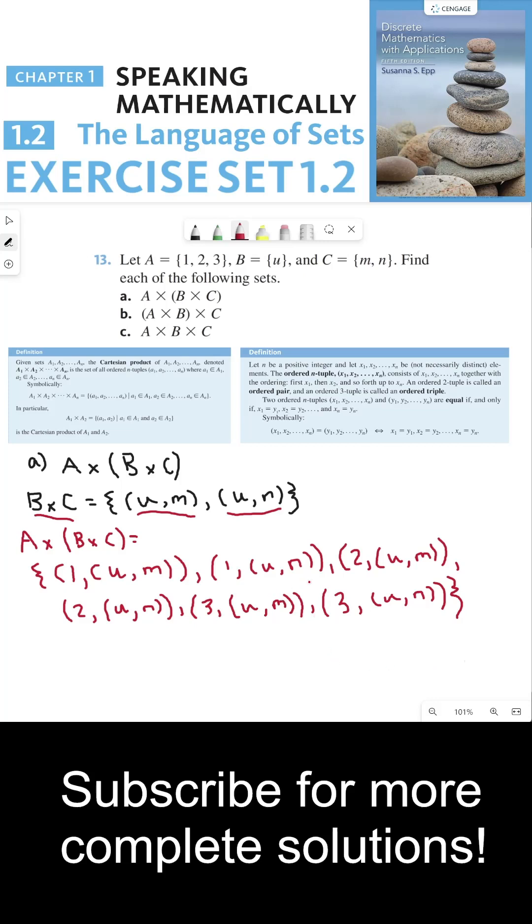So this cross product has six elements. All six are ordered pairs where the first elements are elements from A and the second elements are elements from B cross C. And with that written out, I'm going to type out the rest.